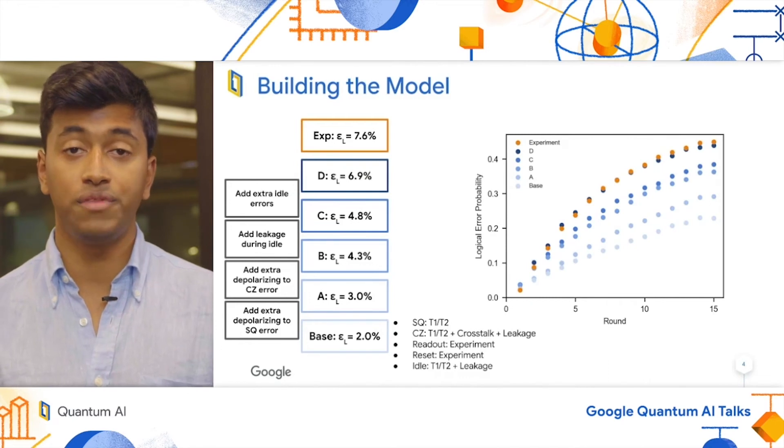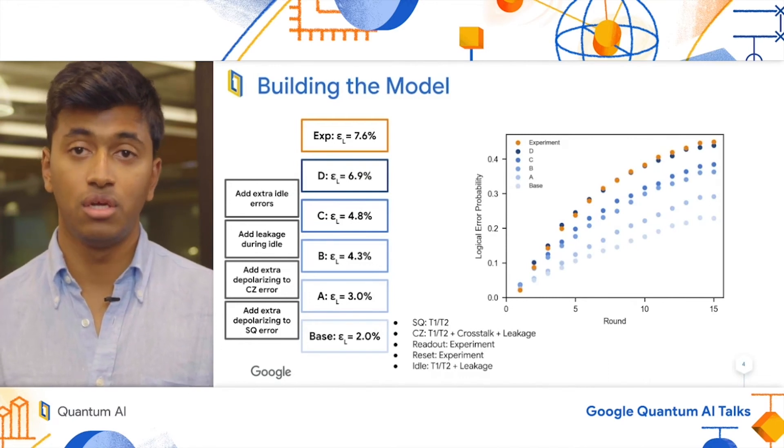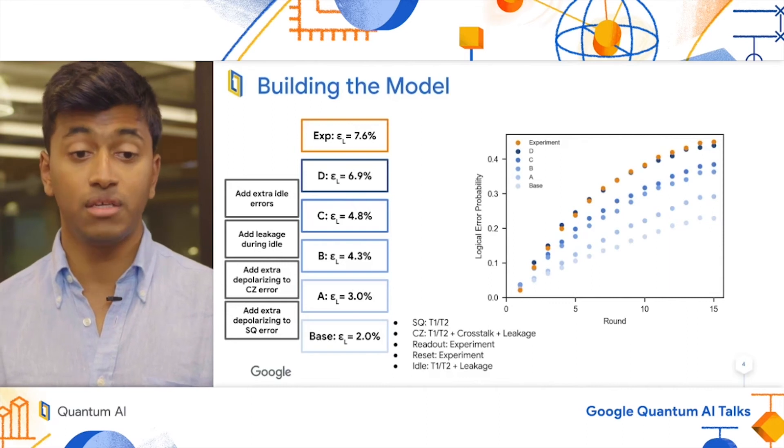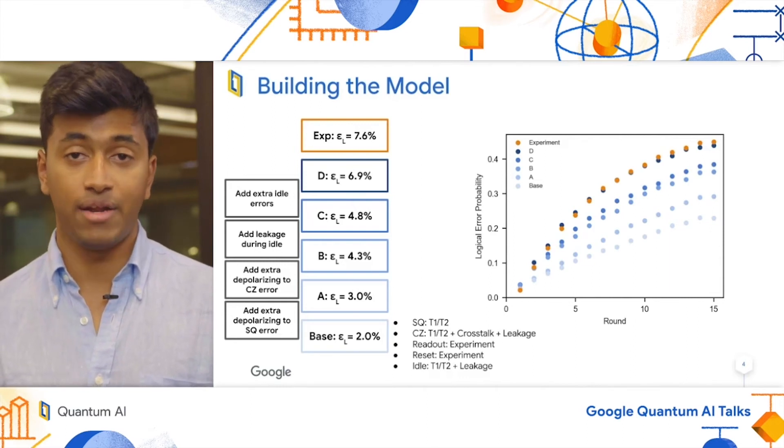Here, I'm plotting all of the different error models I've just discussed in blue, and the experiment shown in orange. You can see that our final model does match the experiment pretty closely. You can also see that the biggest jump was this last step from C to D, where we added extra idle errors in.